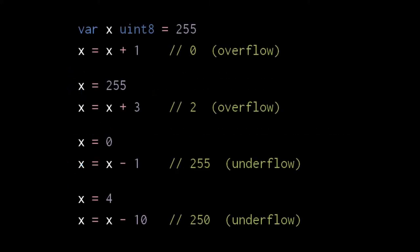You may be wondering what happens when the results of number operations produce values too big or too small for the number type range. In general, the result will wrap around. For example, the max value of a uint8 is 255, and so if we add 1 to 255, the value overflows to 0. And if we add 3 to 255, the value overflows to 2. Conversely, if we subtract 1 from the smallest uint8 value, which is 0, we get underflow to 255. If we subtract 10 from 4, we get underflow to 250. The same thing happens for all integer types, just with different min and max values.